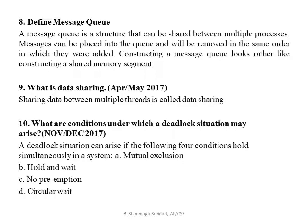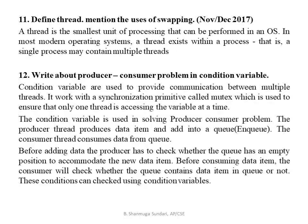Under what conditions may deadlock occur? Hold and wait, no preemption, and circular wait. Define thread and mention the use of swapping: a thread is the smallest unit of processing performed in an OS. In a modern operating system, a thread exists within a process — a single process can contain multiple threads.